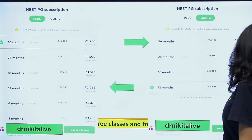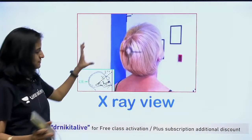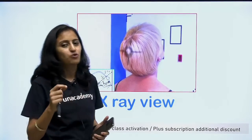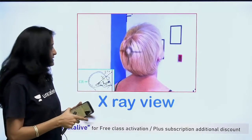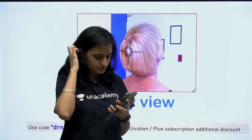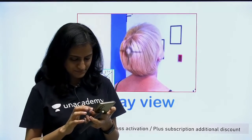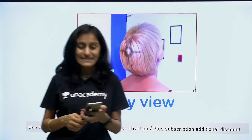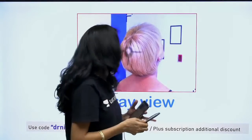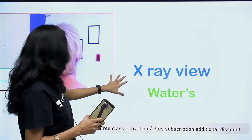Let us start with the session. Here is the first slide. Identify this X-ray view — the paranasal sinuses X-ray views. We have discussed it before; this is just an overview of the important points. What do you think? Which X-ray view is this? Absolutely right — this is your Water's view. The nose-chin method. You can see here the chin touching the image receptor. That is the Water's view.